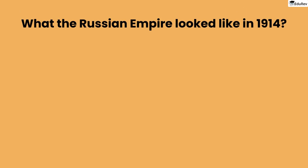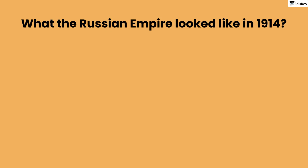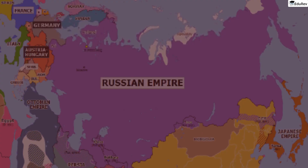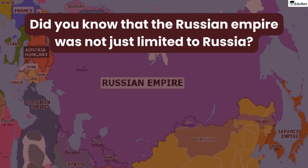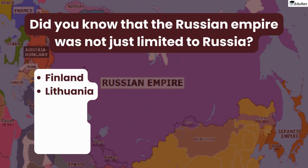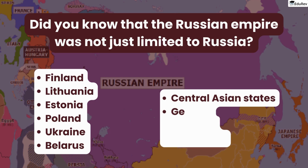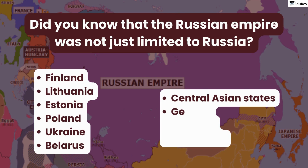Before we dive into the details of the revolution, let's take a moment to understand what the Russian Empire looked like in 1914. Tsar Nicholas II ruled Russia and its empire. The Russian Empire was not just limited to Russia — it included current-day Finland, Lithuania, and Estonia, parts of Poland, Ukraine, and Belarus. It even stretched all the way to the Pacific and comprised today's Central Asian states, as well as Georgia, Armenia, and Azerbaijan.